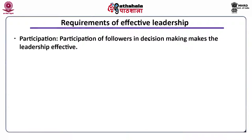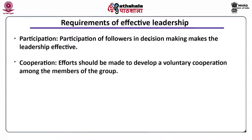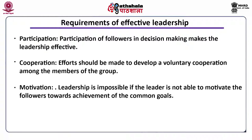Participation of followers in decision making makes the leadership effective. If the followers get importance and recognition they become more committed towards the goals of the group. But the extent of participation should be at a reasonable level because it may lead to delay in decision making. Then next is cooperation — effort should be made to develop voluntary cooperation among the members of the group. If the leader is not able to do it, his other leadership qualities will be less effective. Members should work as a team to achieve the common objectives. Then next is motivation — a leader should keep motivating his followers. Leadership is impossible if the leader is not able to motivate followers towards achievement of common goals. Various styles of leadership consider different types of motivational measures. It is desirable to adopt positive measures rather than negative ones for effective leadership.